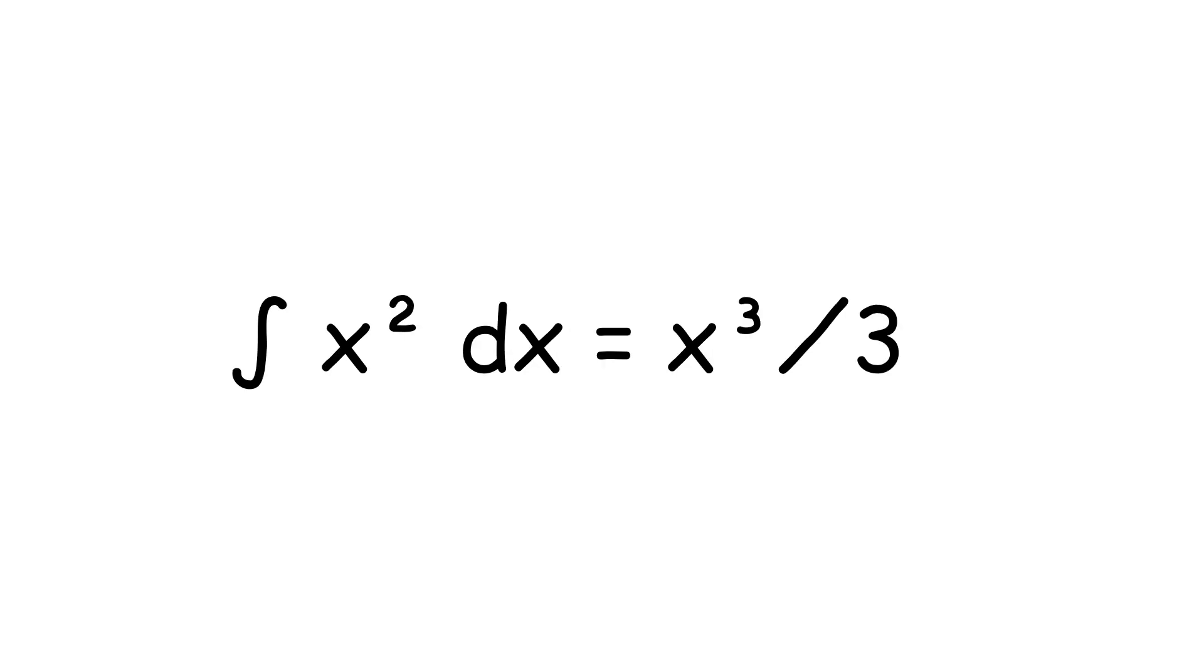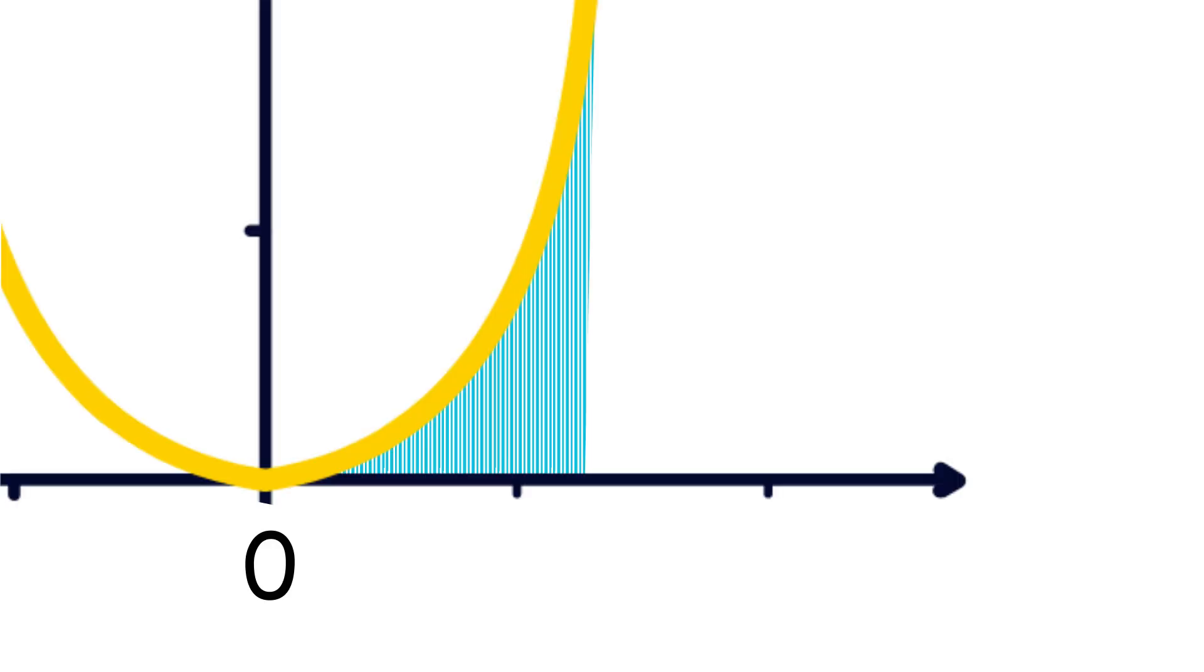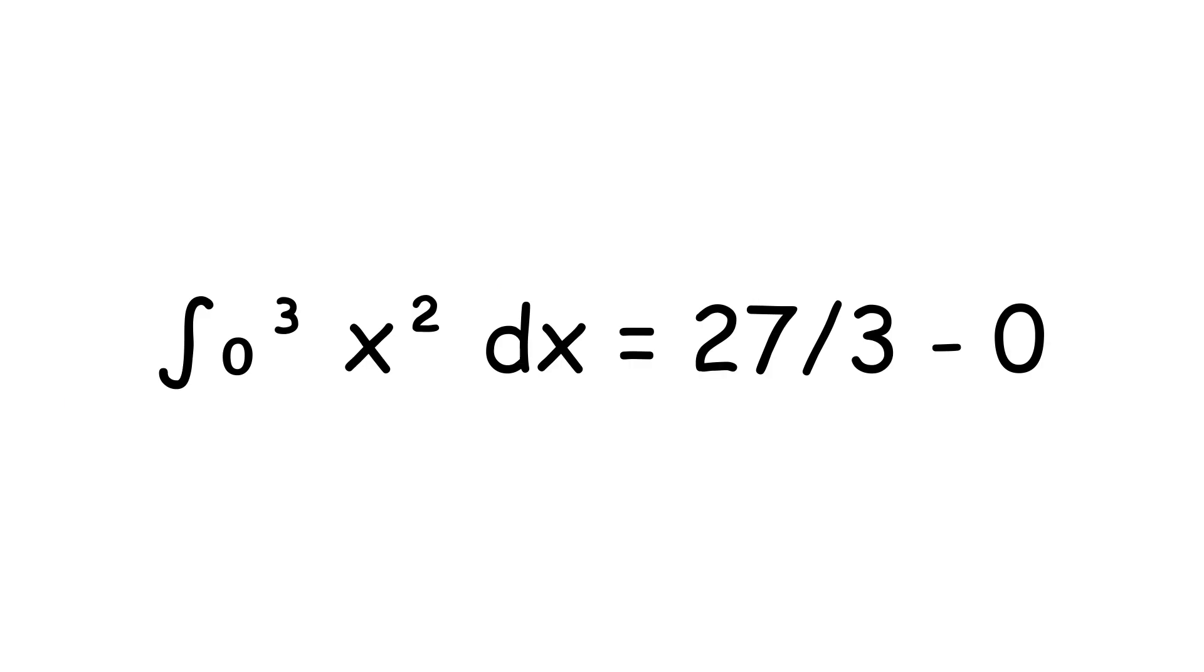So for x power 2, it is x power 3 divided by 3. Now calculate from x equals 0 to x equals 3: 27 divided by 3 minus 0 equals 9 square units. That's close to our estimate, but now it's exact.